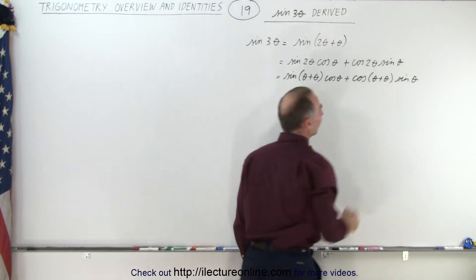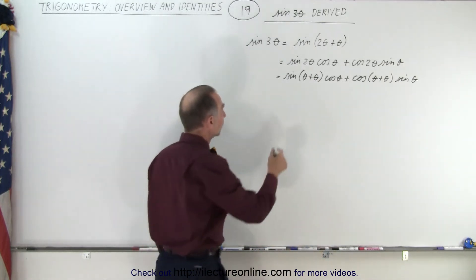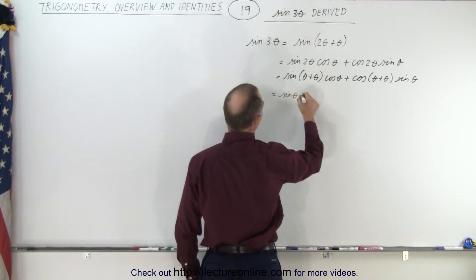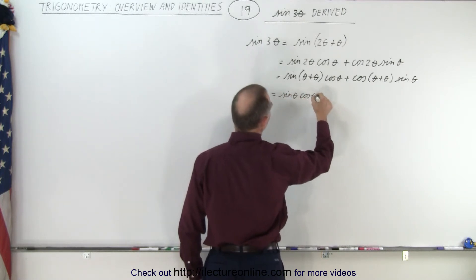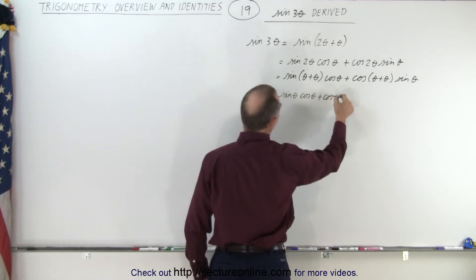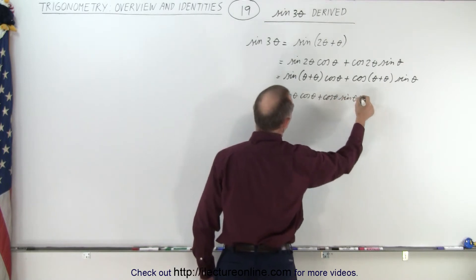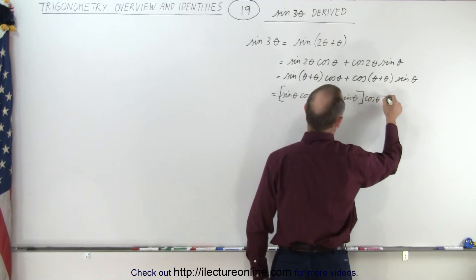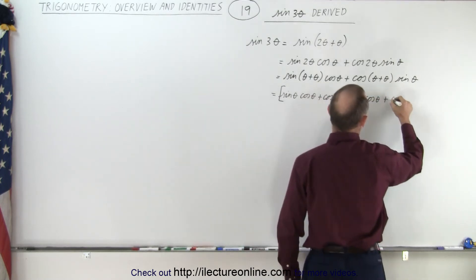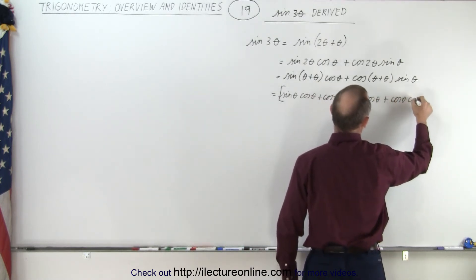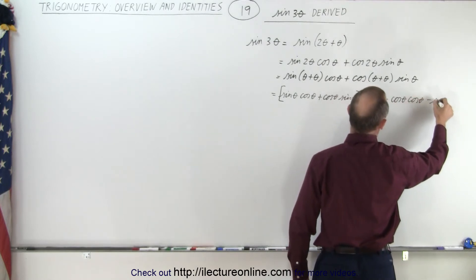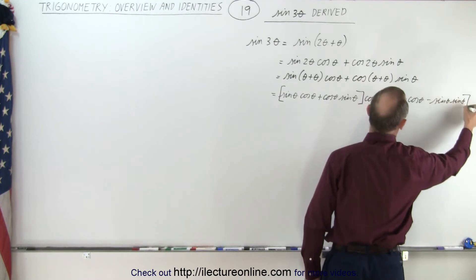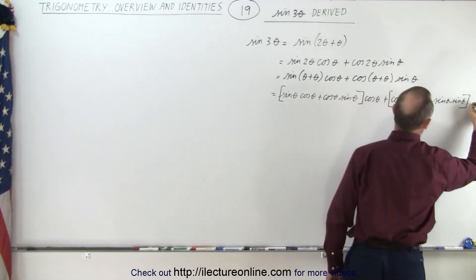The sine of 2 theta can also be written as the sine of theta plus theta, and the same with the cosine of 2 theta. So we can write this as the sine of theta plus theta times the cosine of theta, plus the cosine of theta times the sine of theta. We can then find the equivalents of those statements, so this becomes the sine of theta times the cosine of theta plus the cosine of theta times the sine of theta, all multiplied times the cosine of theta. And here this becomes the cosine of theta times the cosine of theta minus the sine of theta times the sine of theta, all multiplied times the sine of theta.